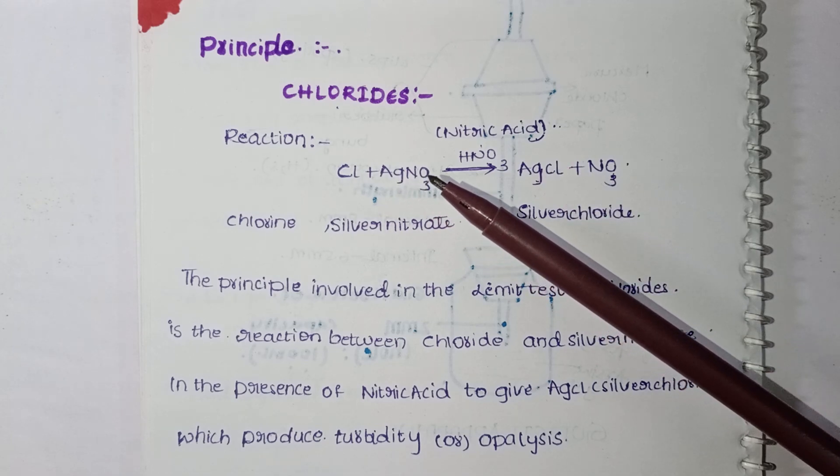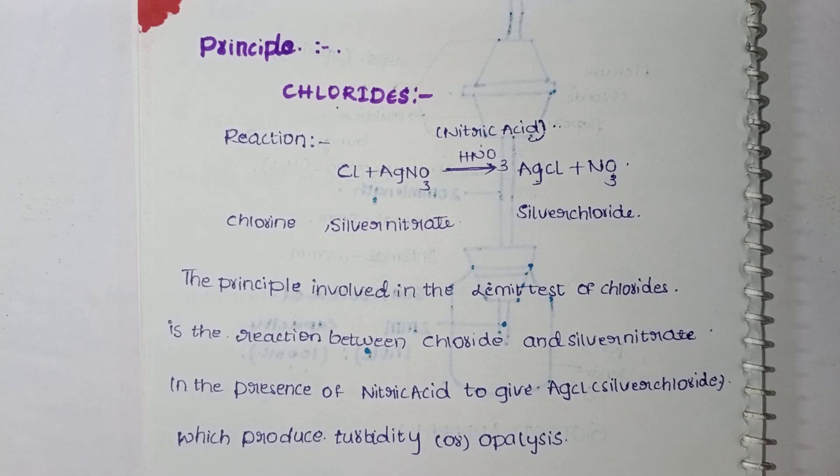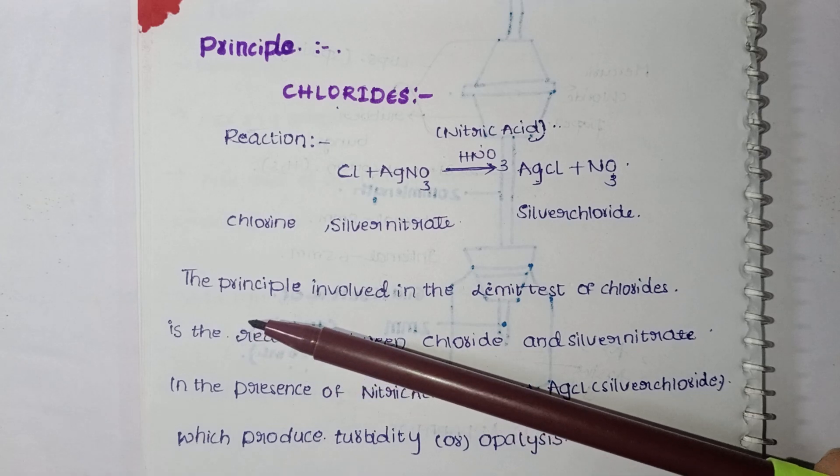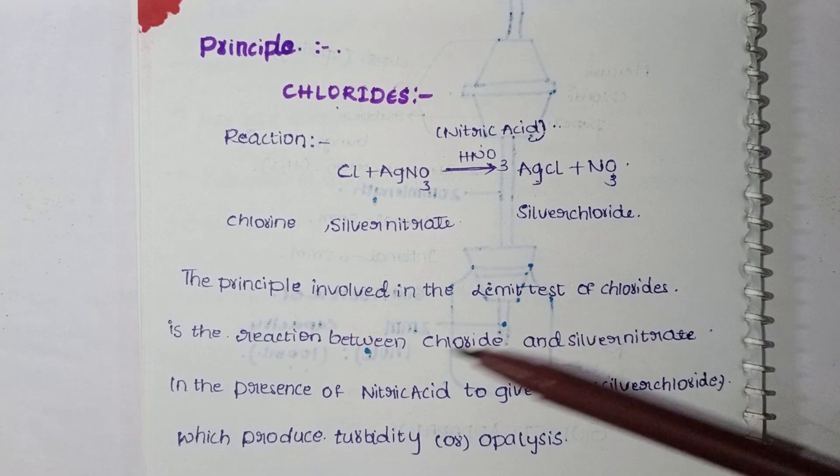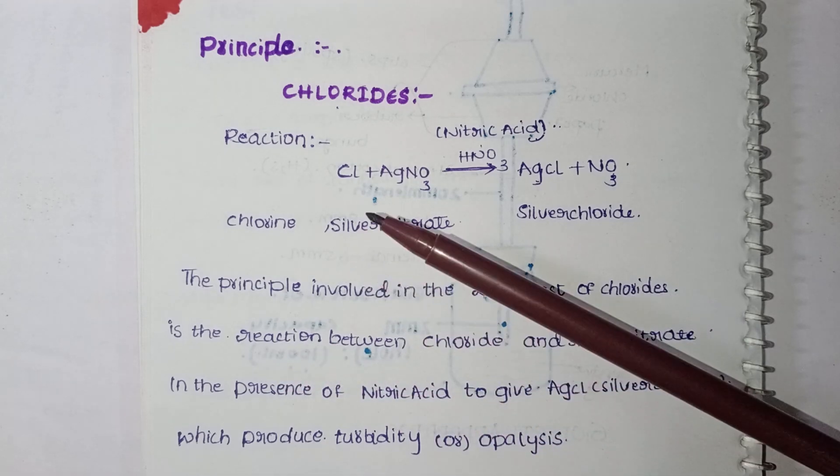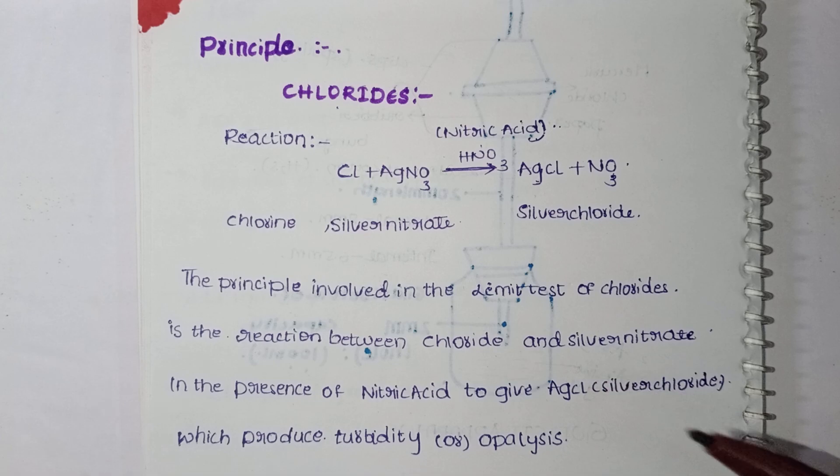And leftover NO3, that is NO3. So if we are writing the topic, we write the principle. The principle involved in the limit test of chloride is the reaction between chloride and silver nitrate in the presence of nitric acid to give silver chloride, which produces turbidity or opalescence.